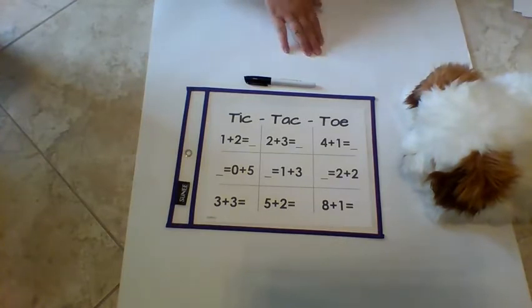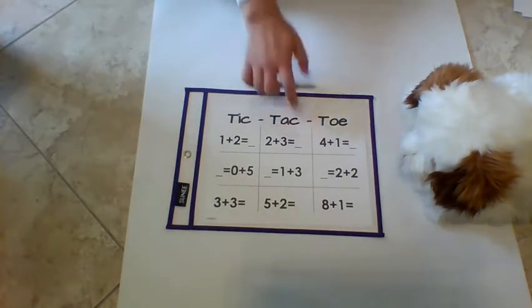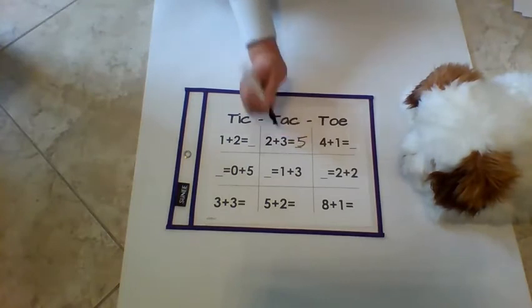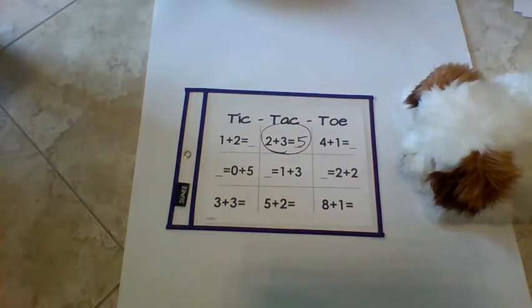The starting player will read the number sentence and solve it. Two plus three equals five. Since I solved this correctly, I can use my symbol and cover the square.